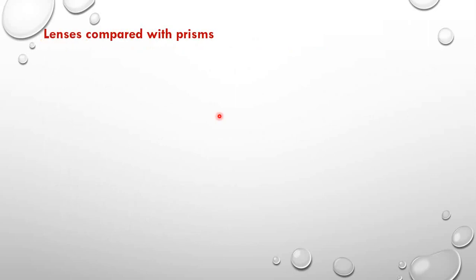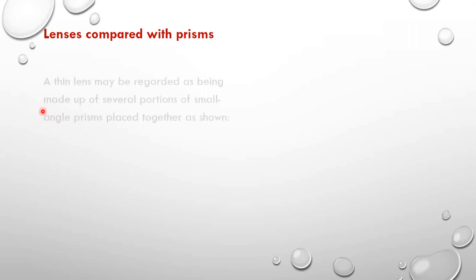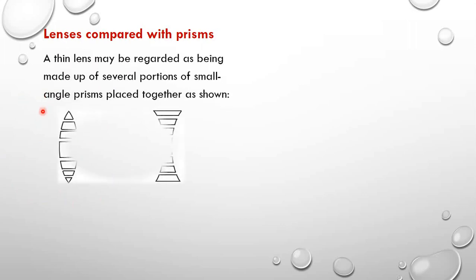Let us look at lenses in comparison with prisms. Lenses are like small angled prisms joined together. When we take these small angled prisms and add them together, we form the lens. That is how we can compare lenses with prisms.